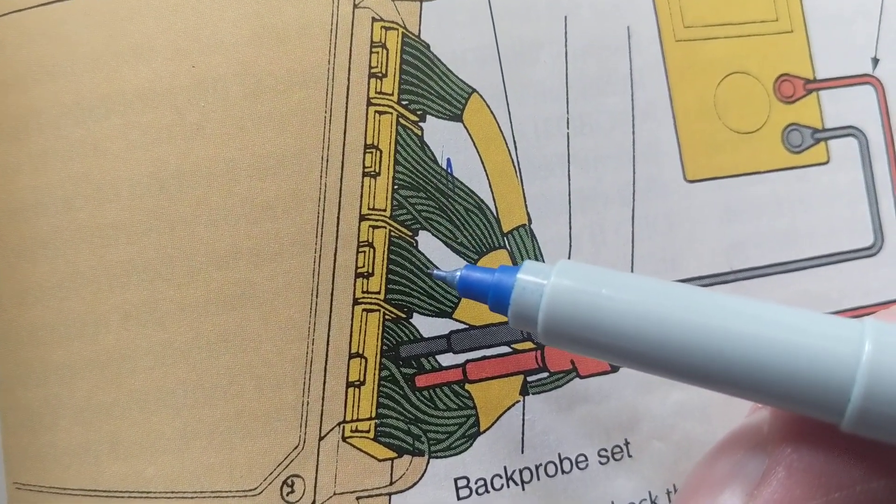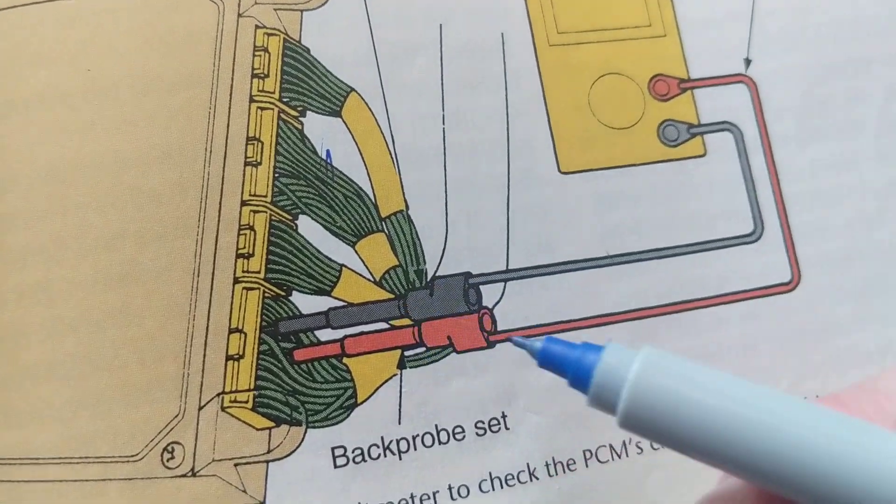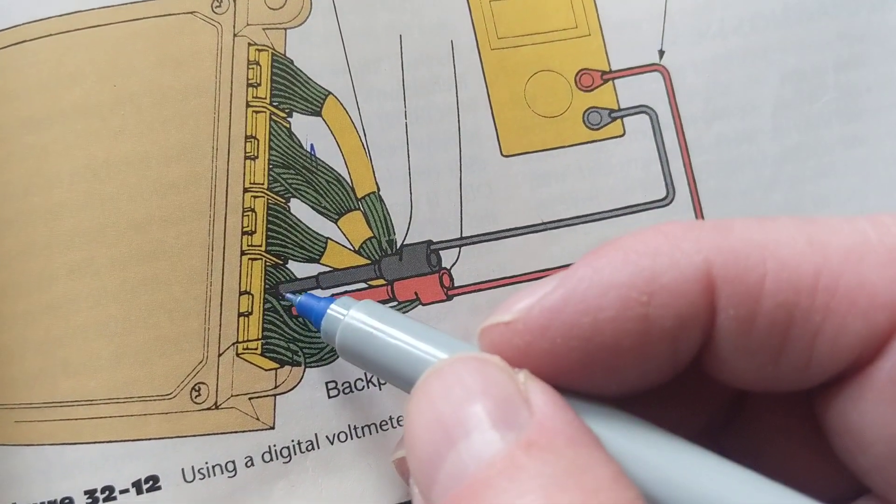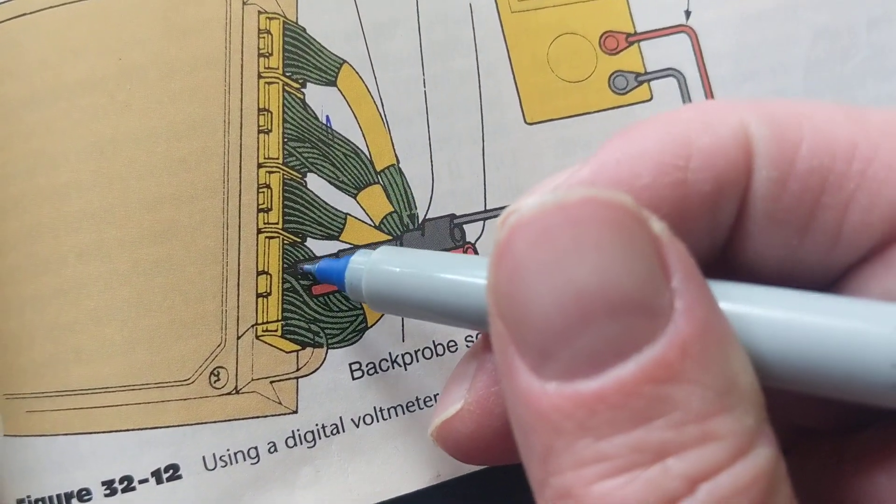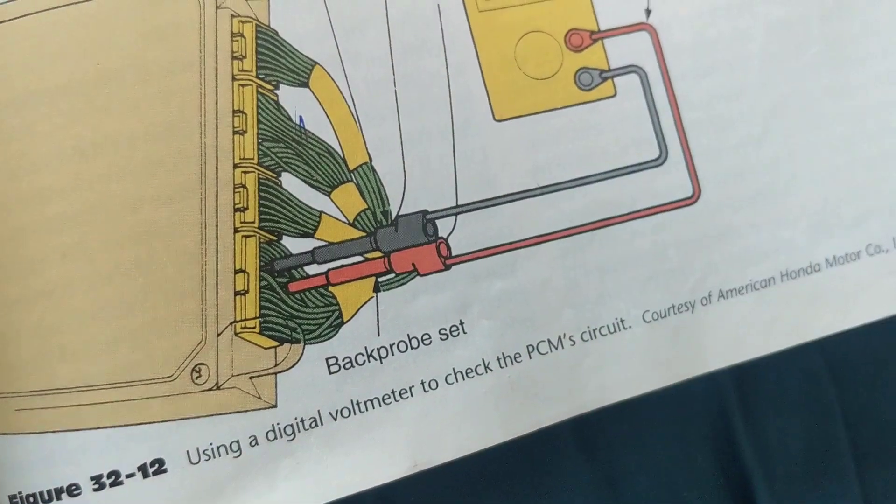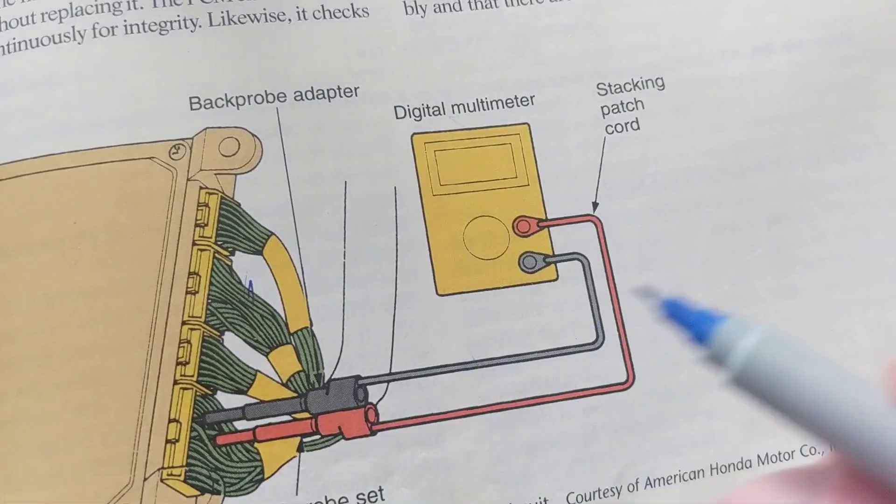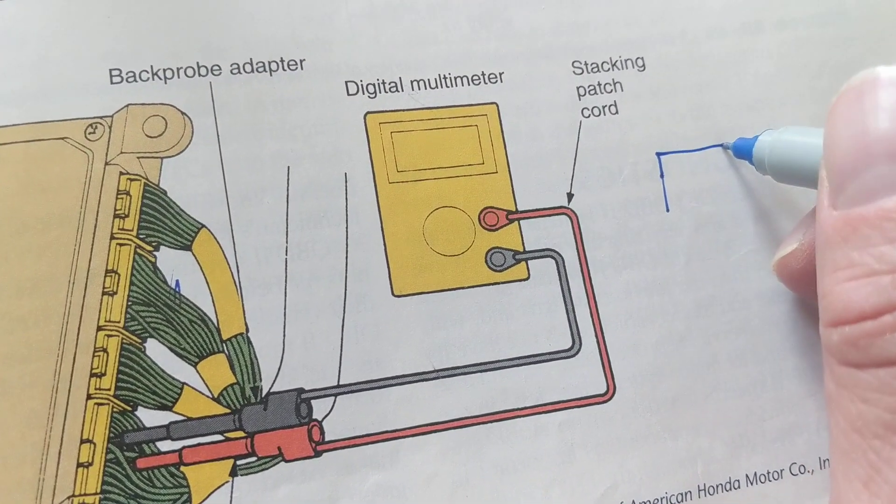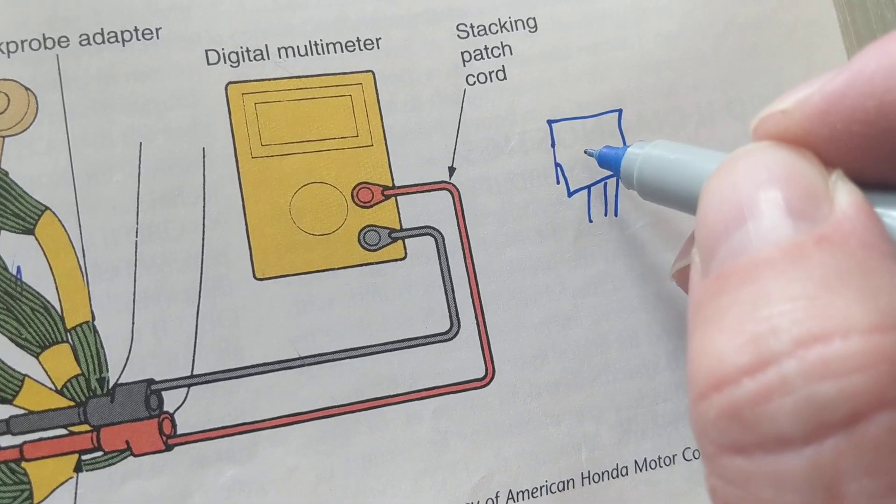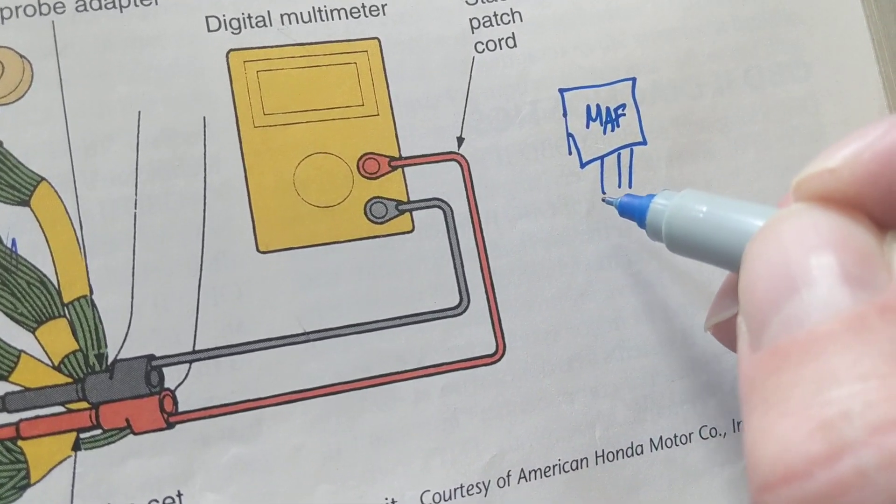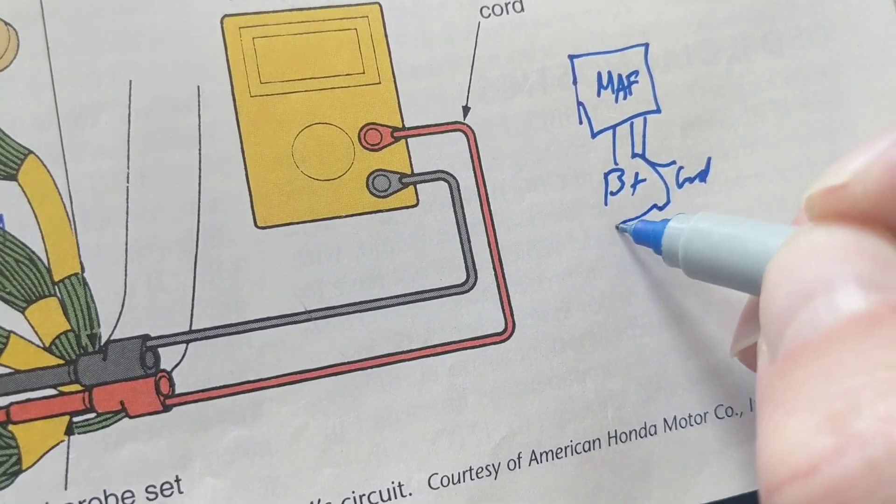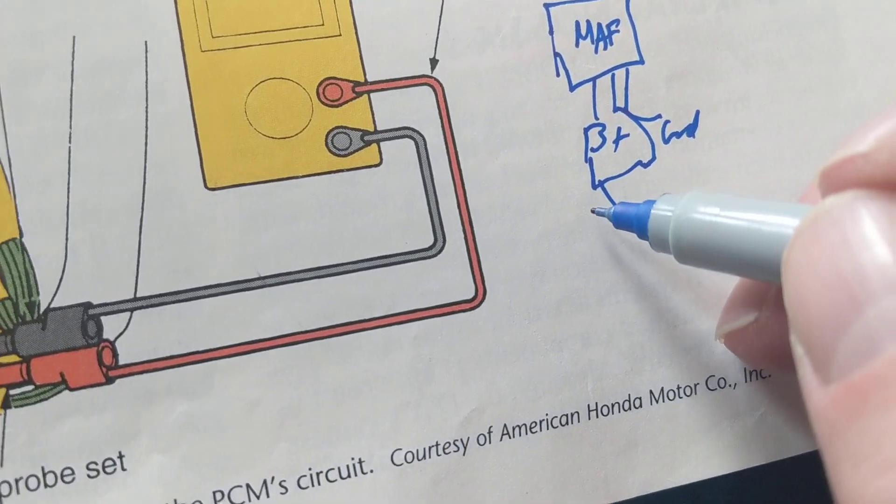So let's say this example over here. A back probe, back probe means we try to put the pins or these probes to try to stick it into these pins or these terminals as close as we can to make an accurate measurement. Now let's say there's a mass airflow sensor over here that we're going to measure, and you're going to have three pins. Mass airflow, okay? You're going to have a B+, you're going to have a ground, and you're going to have a signal that goes back to where? Back to the PCM.